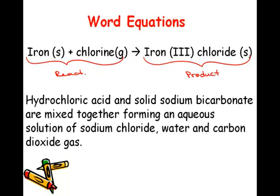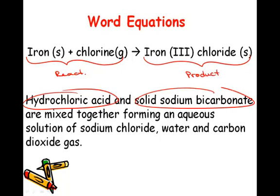Another type of word equation would say something like hydrochloric acid and solid sodium bicarbonate are mixed together, forming aqueous solutions of sodium chloride, water, and carbon dioxide gas. So, here we can still identify the reactants and products. Hydrochloric acid and solid sodium bicarbonate, they're mixed together, so that happens at the beginning. We see the keyword forming, and then the sodium chloride, water, and carbon dioxide are our products.